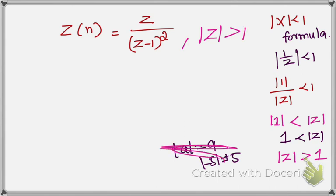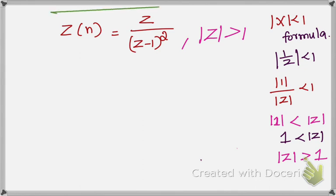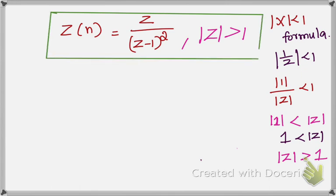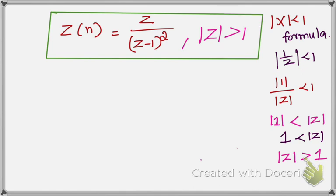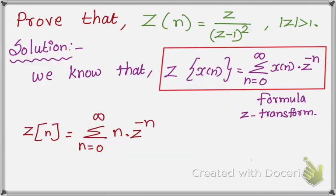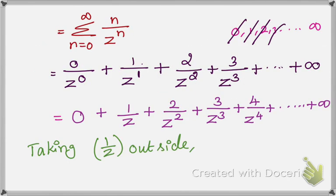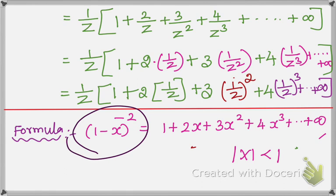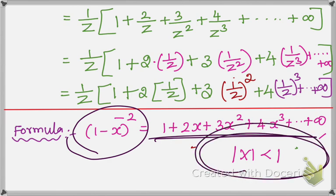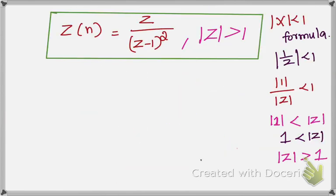Therefore the final answer is: Z of n equals Z over (Z minus 1) the whole square, with mod Z greater than 1 — which is what we had to prove. We recalled two formulas: the Z-transform definition, and the binomial expansion (1 minus x) to the power minus 2 equals 1 plus 2x plus 3x squared plus 4x cubed up to infinity, with mod x less than 1. Thank you.